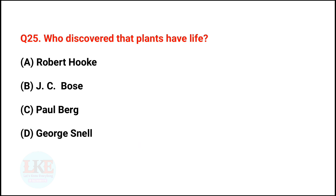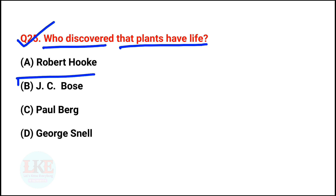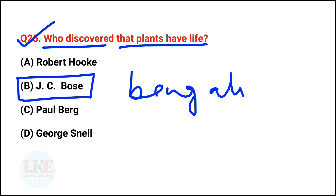Last and final question, number 25: who discovered that plants have life? A) Robert Hooke, B) JC Bose (Jagadish Chandra Bose), C) Paul Berg, D) George Snell. The right answer is option B — JC Bose. Bengali scientist Jagadish Chandra Bose first discovered that plants have life, like other life forms.